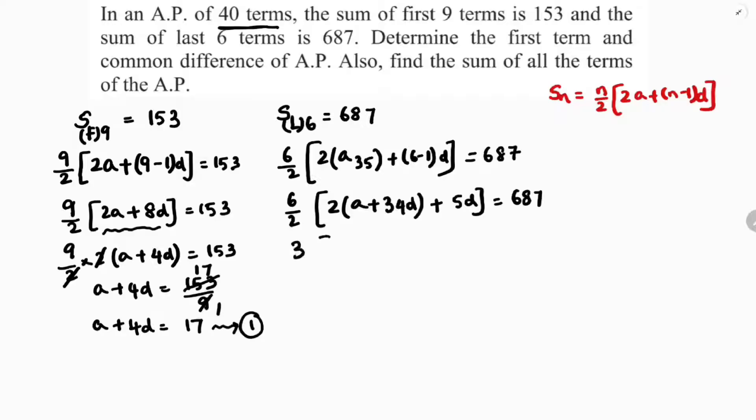6 by 2 is 3. 2 times A, 2 times 34 is 68D, plus 5D is 687. Now 2A plus 68 plus 5D is 68 plus 5, 73D, equals 687 by 3. 2A plus 73D is 229. This is equation 2.